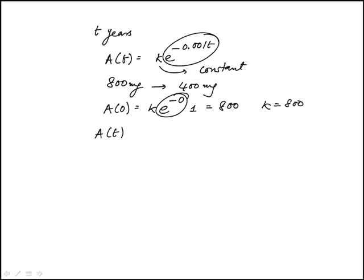So our function is a of t is 800 times e to the power of minus 0.001t. We want to find the time, this value, when it's down to 400 or half.